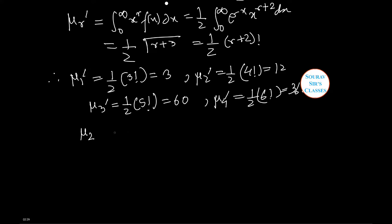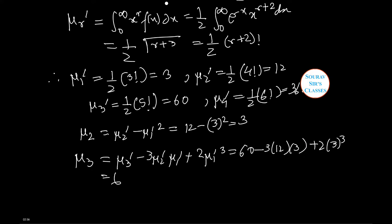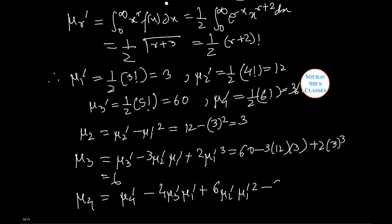Now let us find the central moments. Mu 2 equals mu 2 dash minus mu 1 dash squared, which is 12 minus 9, equal to 3. Mu 3 equals mu 3 dash minus 3 times mu 2 dash times mu 1 dash plus 2 times mu 1 dash cubed, which equals 60 minus 3 times 12 times 3 plus 2 times 27, equal to 6. Mu 4 equals mu 4 dash minus 4 times mu 3 dash times mu 1 dash plus 6 times mu 2 dash times mu 1 dash squared minus 3 times mu 1 dash to the power 4, which equals 45.